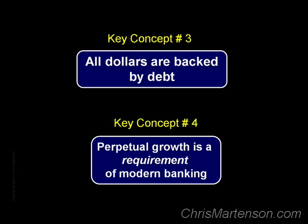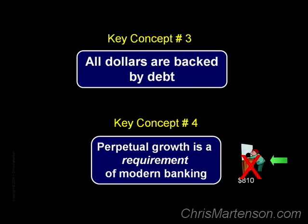Without a continuous expansion of the money supply, past debts would not be able to be serviced and defaults would ripple through and possibly destroy the system. Defaults are the Achilles heel of a debt-based money system, which we saw in our local banking example in the previous chapter. Because of this, all the institutional and political forces in our society are geared towards avoiding this outcome. So the banking system must continually expand — not because it's the right or wrong thing to do, but simply because that is how it was designed. It's a feature of the system, just like using gasoline as a feature of my car's engine.